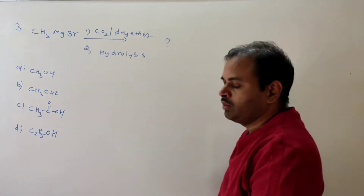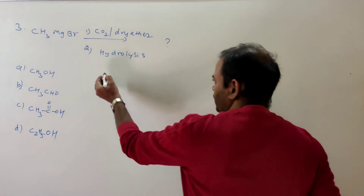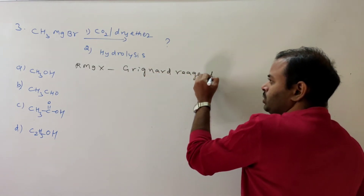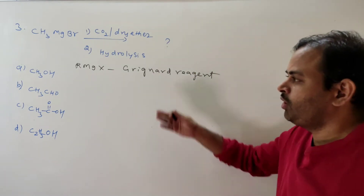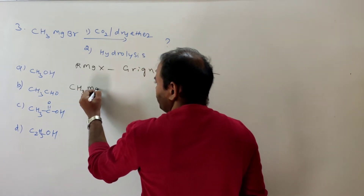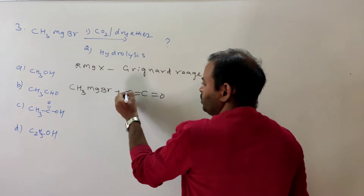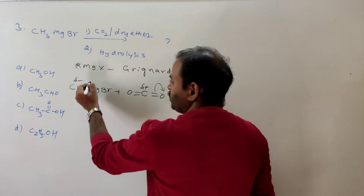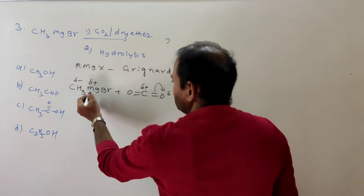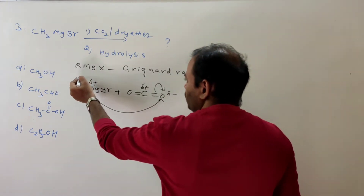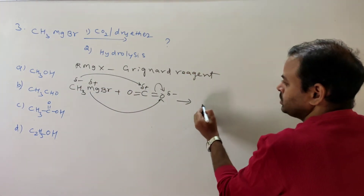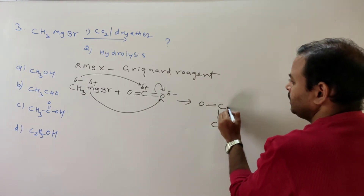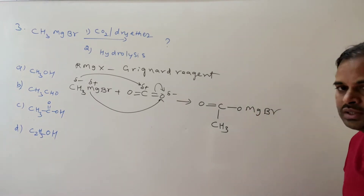Third question involves CH3MgBr — alkyl magnesium bromide — which is R-MgX, the Grignard reagent. The Grignard reagent reacts with CO2 in presence of dry ether, followed by hydrolysis. CH3MgBr reacts with CO2: due to electronegativity, oxygen gets a negative charge and carbon gets a positive charge. The carbon part of Grignard gets a negative charge and the metallic part gets a positive charge. The positive part goes toward the negative center and vice versa, giving an intermediate with CH3 at the positive center and O-MgBr at the negative center.